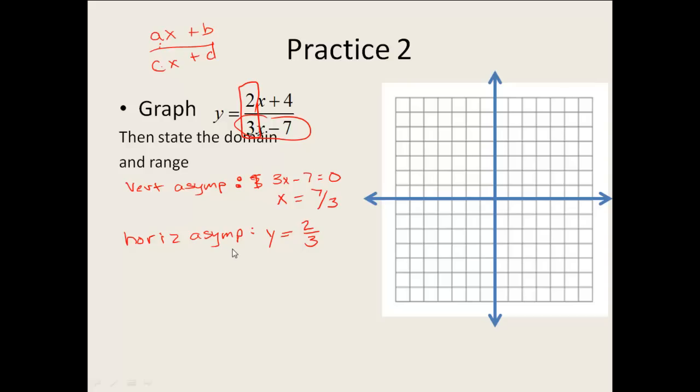Once you get your vertical asymptote and your horizontal asymptote, go ahead and sketch those. Now you can use your sketch to decide what your table of values is. Well, my vertical asymptote is over here at 7 thirds, which is 2 and 1 third. So I need to pick points to the left and to the right of it. I'm going to go ahead and pick 2, 1, and 0 for my points to the left of it. And for my points to the right of it, I'm going to pick 3, 4, 5.